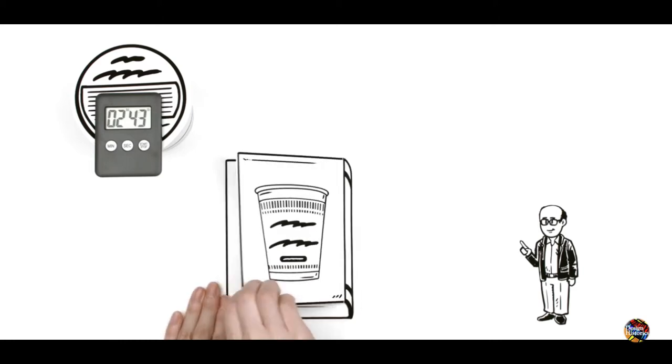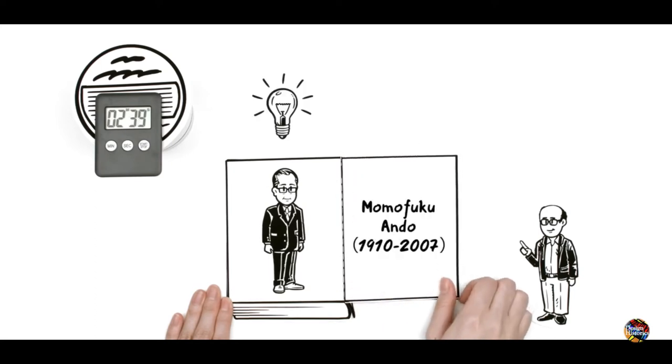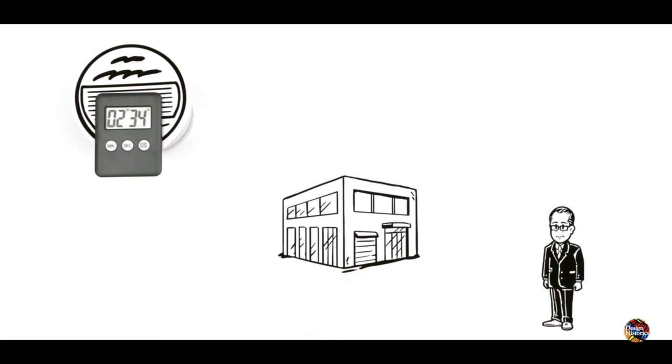The history of instant noodles begins in Japan in 1958, when Momofuku Ando invented instant ramen. Momofuku was chairman of a credit association, but it failed, and he lost everything.